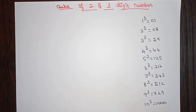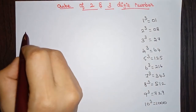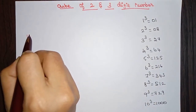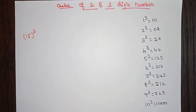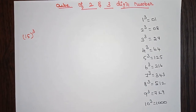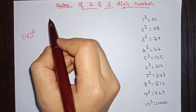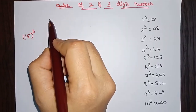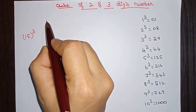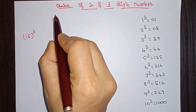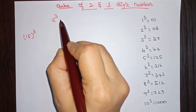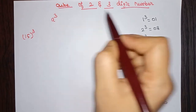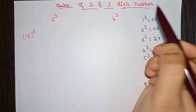Let us take one example and try to solve it. First we'll take the value 15 cube — we'll try to find the cube of 15, which is a two digit number. In the previous video we discussed about the square of two and three digit numbers, and for that we used a formula. Here also we are going to use the same formula. The formula we are going to apply: we have to find a cube, then we have to find b cube, and again we are going to find...